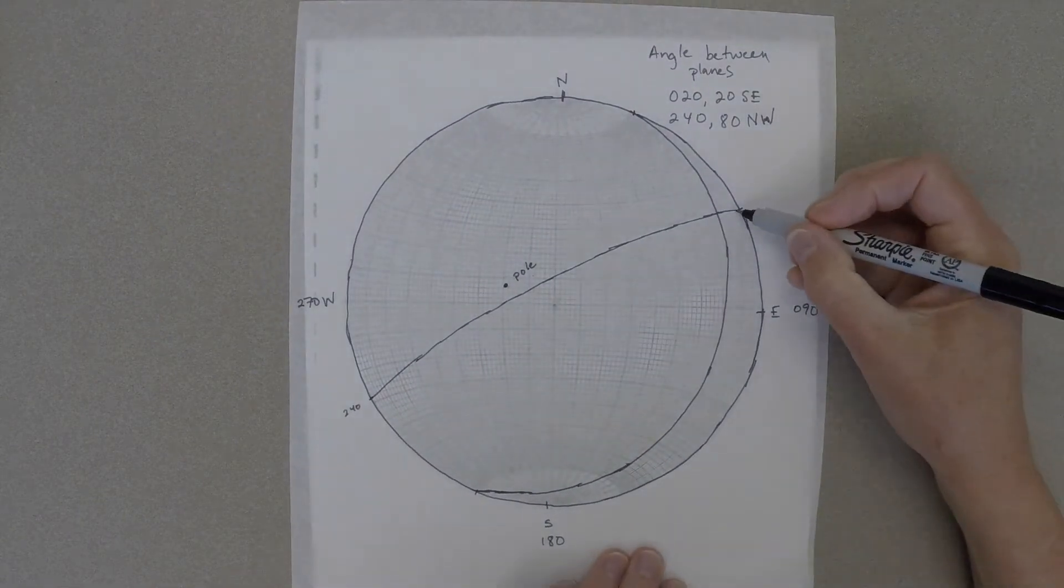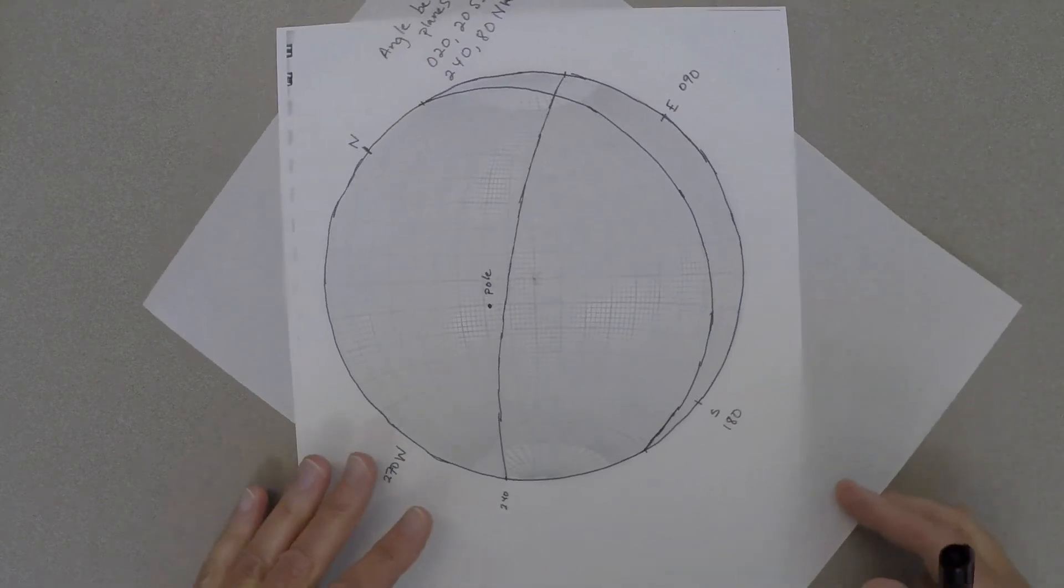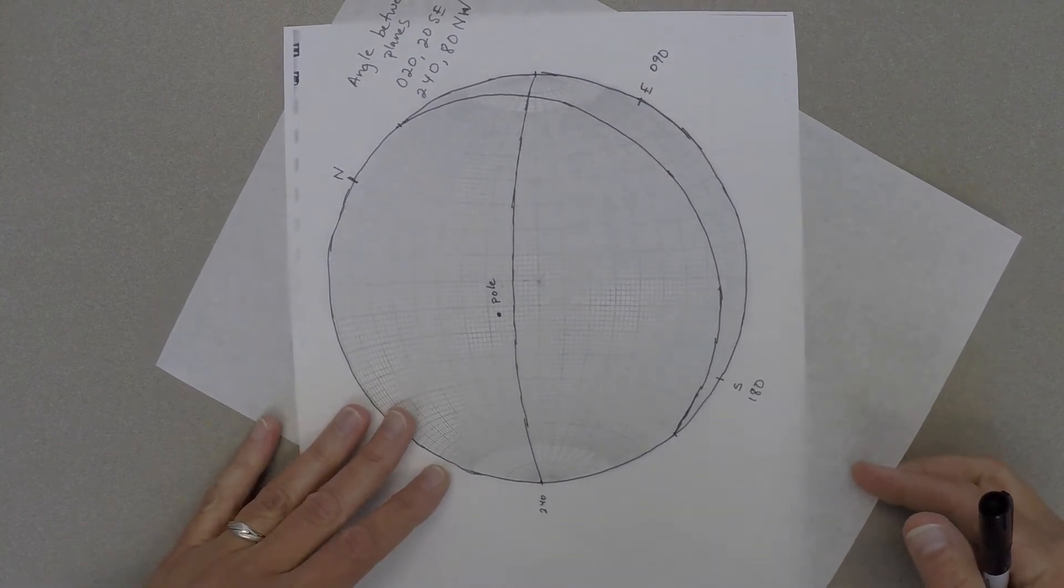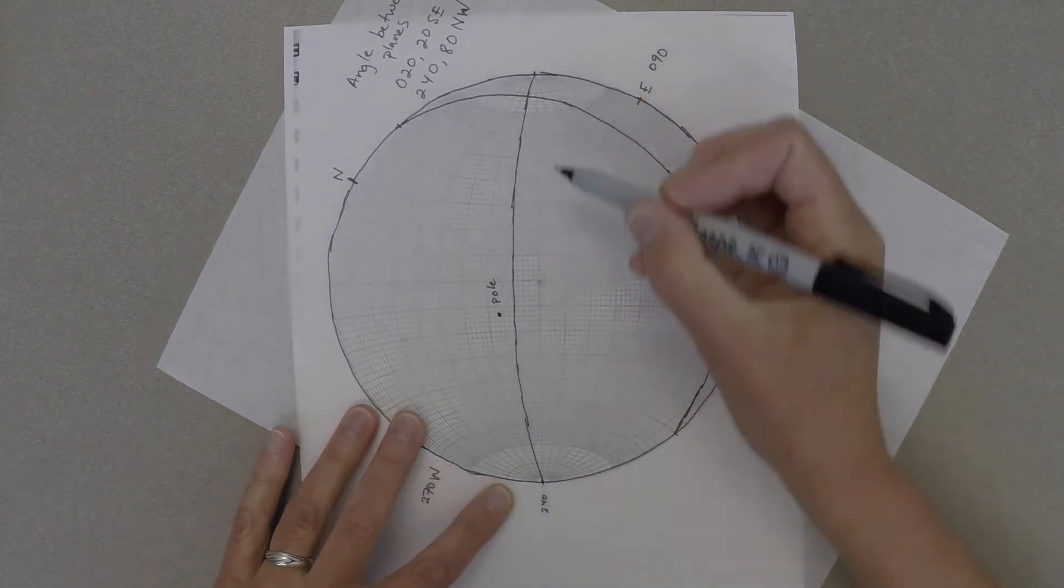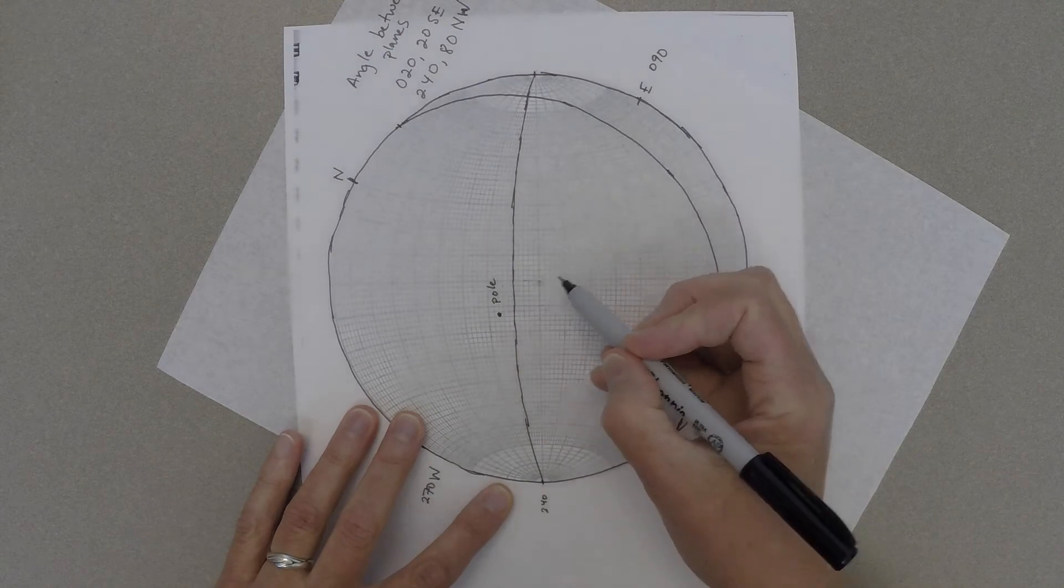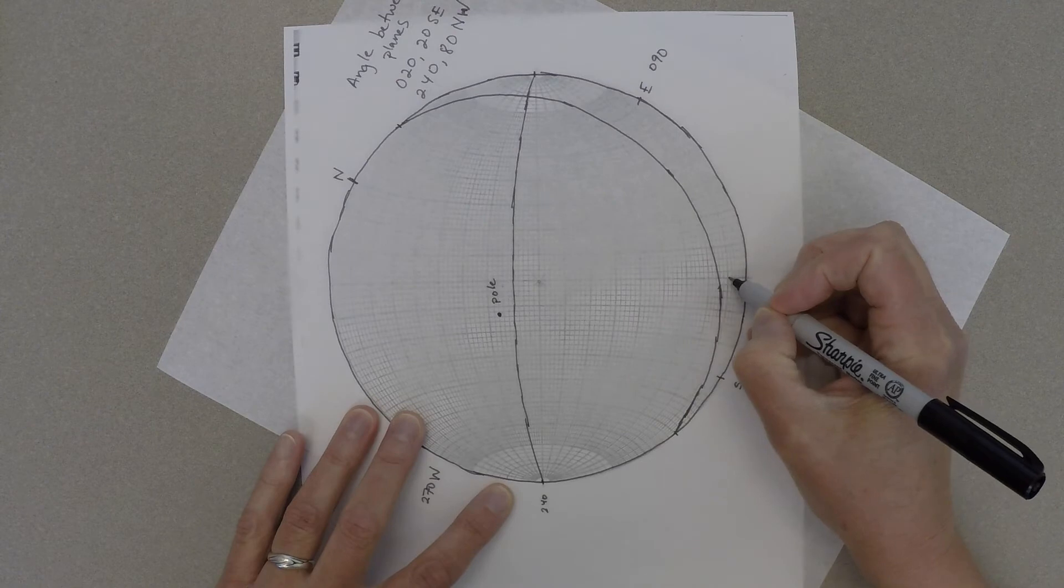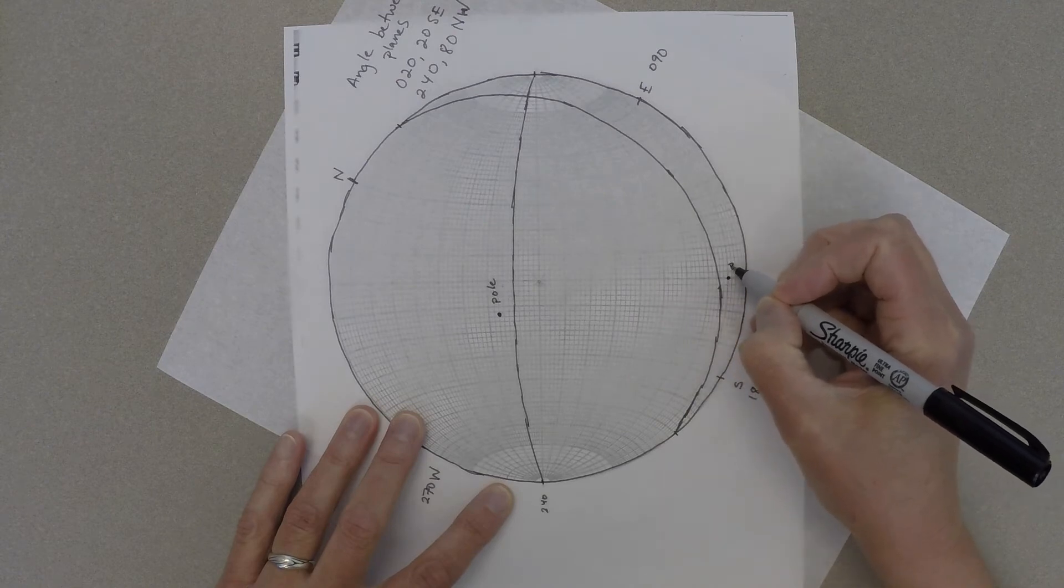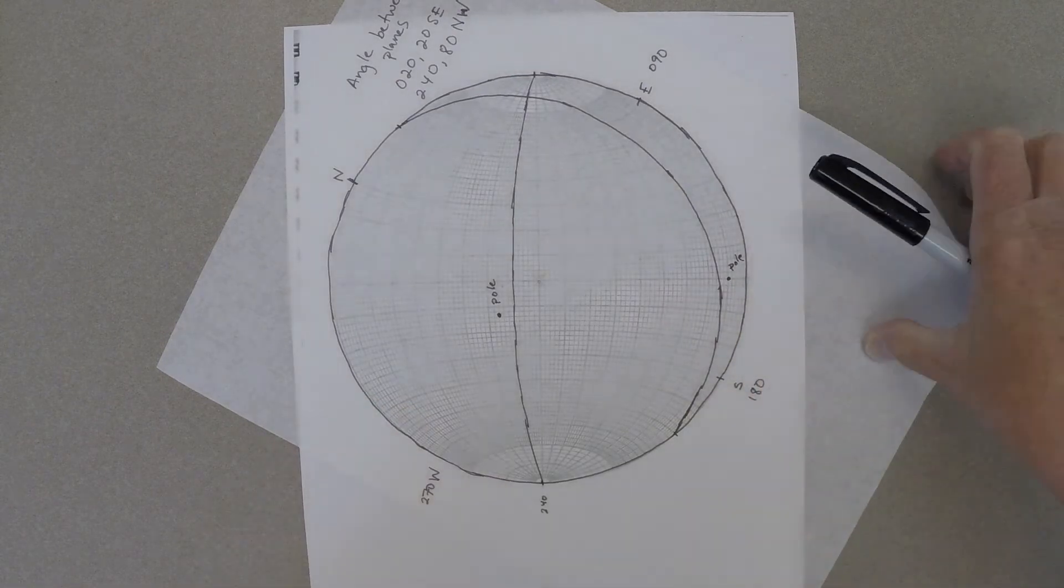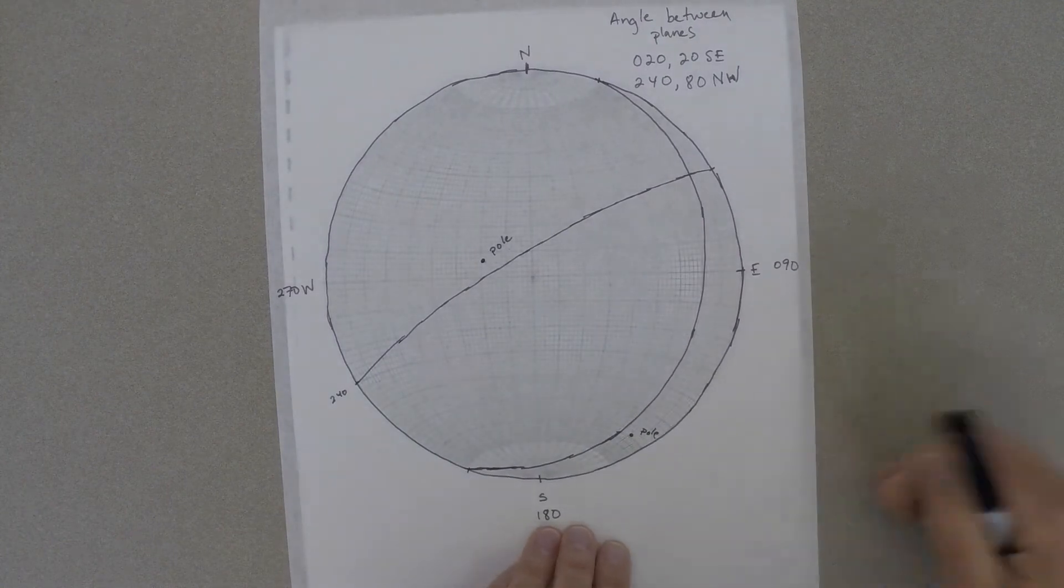Then we're going to do the same thing for our second plane. We're going to line that plane up with its strikes at north and south, and it's going to lie along a great circle. Then we're going to count 90 degrees along the equator and make a second dot. And that is the pole to the plane striking 240 degrees and dipping 80 to the northwest.